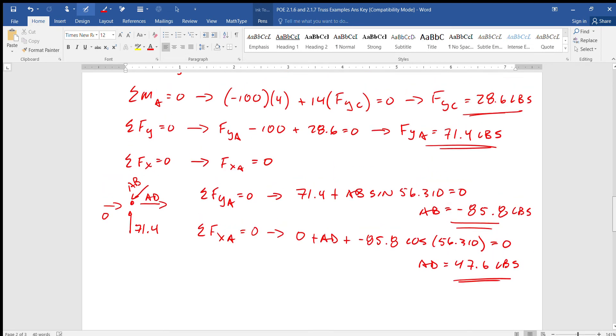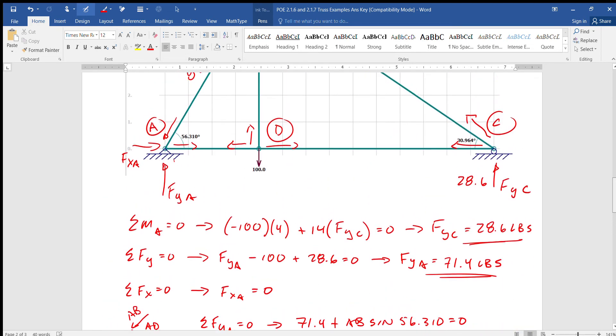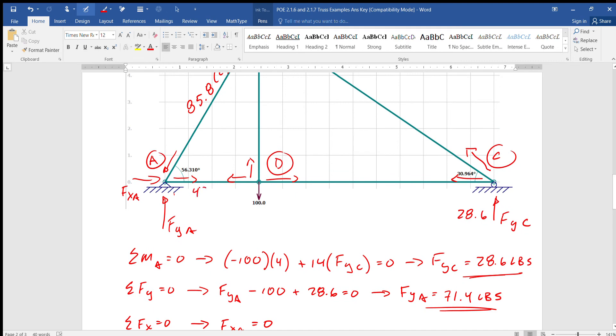Therefore AD equals 47.6 pounds. I forgot to write in pounds. So again we go up, we put that in. It's in tension because we didn't change anything. 47.6 tension.